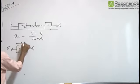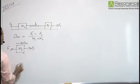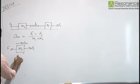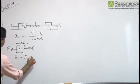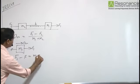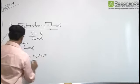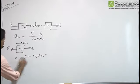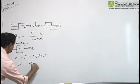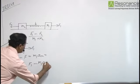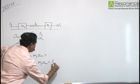For mass M1 with acceleration ACM, we can write F1 minus F equals M1 times ACM. Therefore, F equals F1 minus M1 times ACM, which is F1 minus M1 times (F1 minus F2) divided by (M1 plus M2).